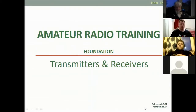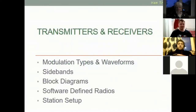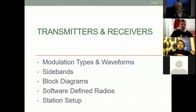Here we are in lesson three of the amateur radio foundation license. This evening we're going to be looking at transmitters and receivers. We're going to be looking at modulation types and waveforms, sidebands, block diagrams — the different sections of radios and how they fit together — software defined radios, and how to set up a station.